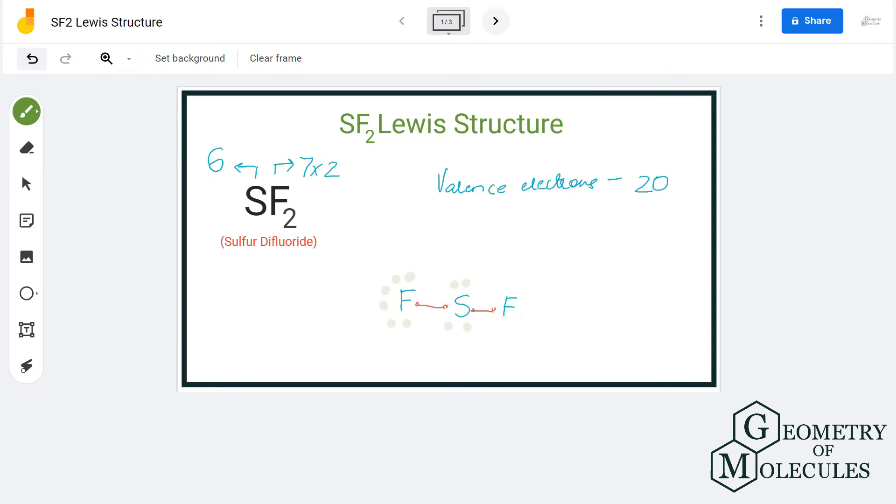Fluorine has eight valence electrons and this is the same for the fluorine atom on this side as well. Even sulfur has eight valence electrons and we have used up 20 valence electrons here.